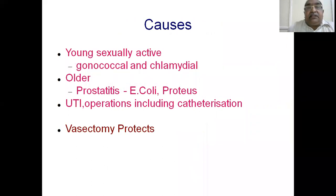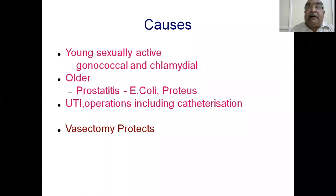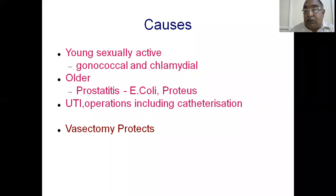In sexually active males in their teens and twenties, the usual cause is gonococcal or chlamydial infection — sexually transmitted diseases. In elderly people past middle age, it is either prostatitis with infection caused by E. coli and Proteus, or a urinary tract infection associated with instrumentation or catheterization. Because it is a retrograde infection from the urinary tract, it spreads to the epididymis through the vas. Vasectomy — division and ligation of the vas — protects the epididymis from retrograde infection.